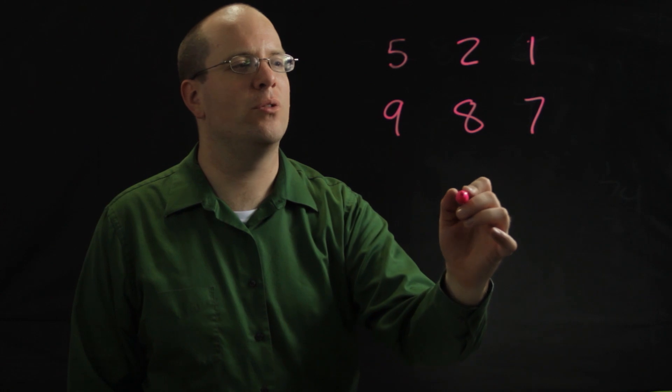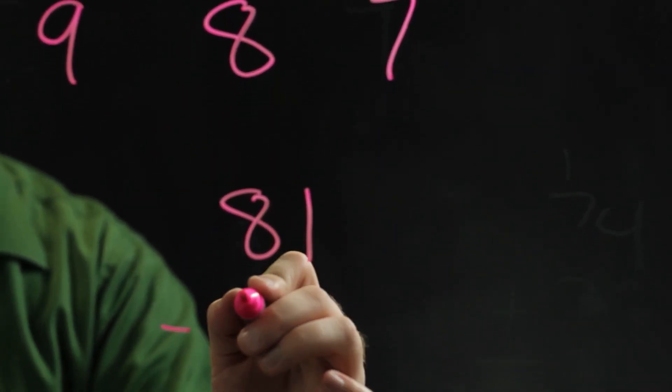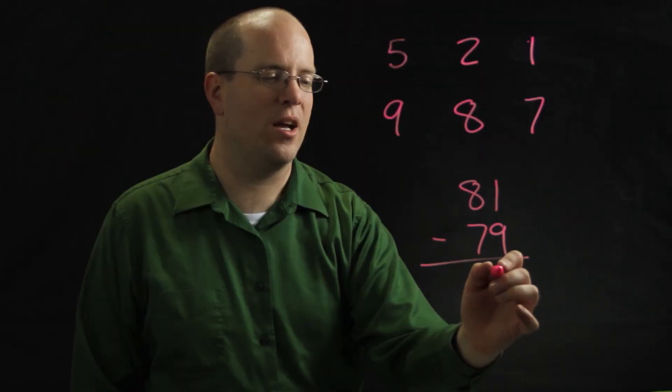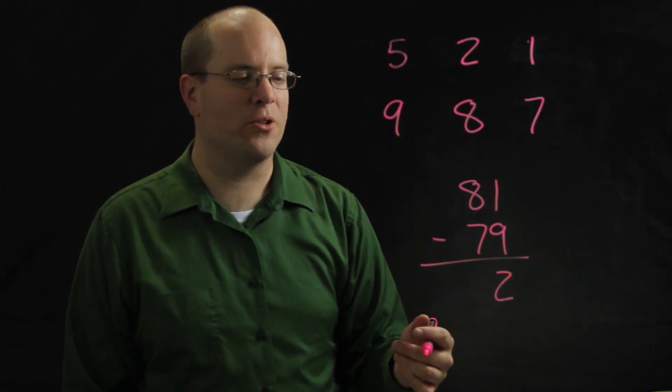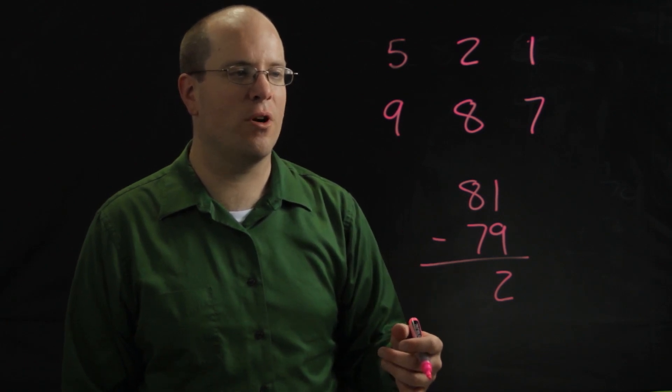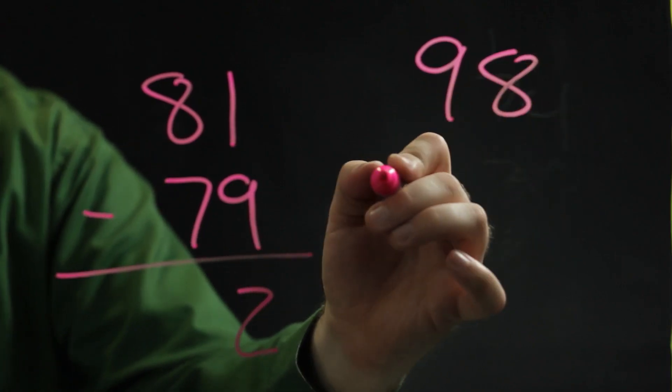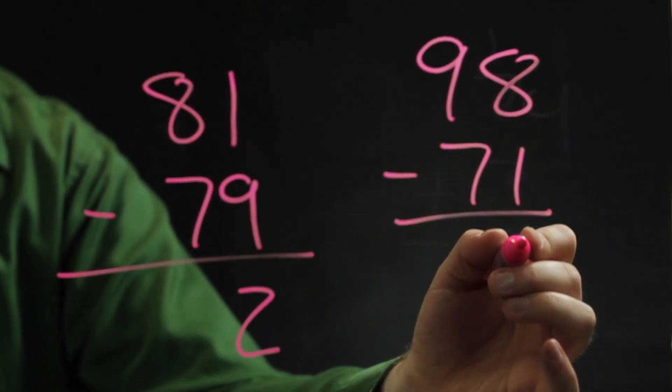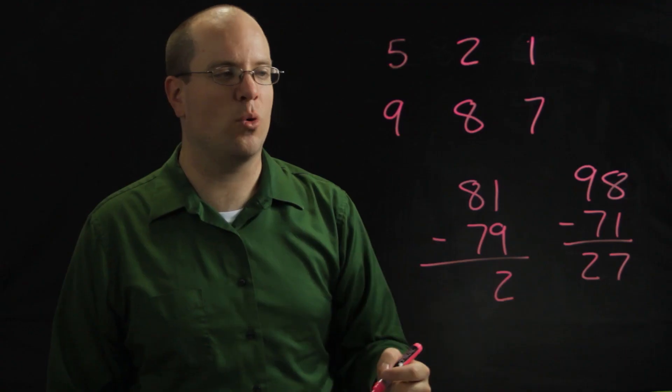So I might do 81 minus 79, and my score would be two. Again, just like Close to 100, you want the lowest score because you're trying to get close to zero. Maybe my partner tried 98 minus 71, so they ended up with 27, and I had a better score than they did.